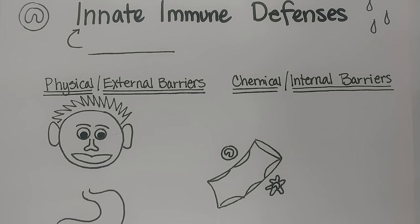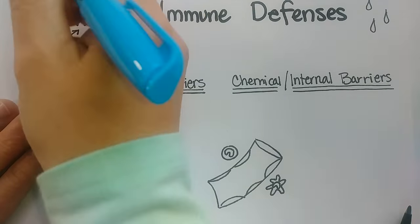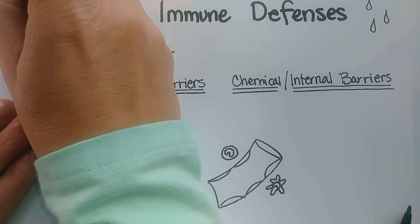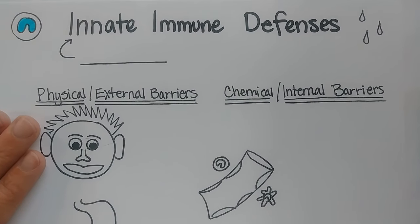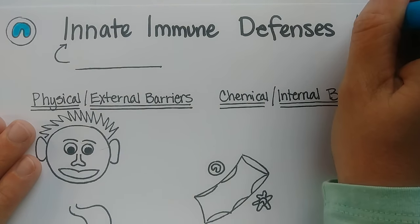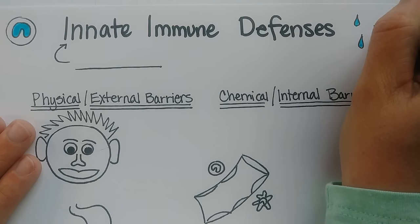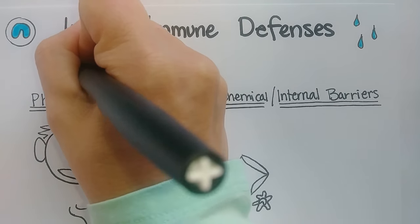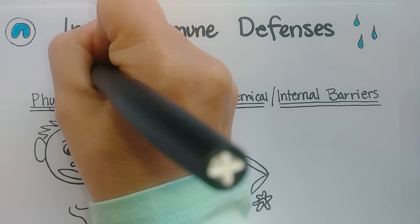Welcome to this video on innate immune defenses. When we use the word innate, we're talking about an ability that you're born with. This doesn't have to develop from exposures. Healthy babies should immediately be able to have these defenses at work, although they're not as strong as they would be in an adult.